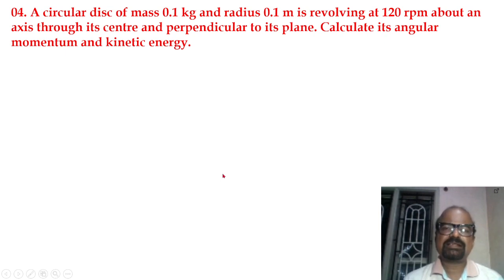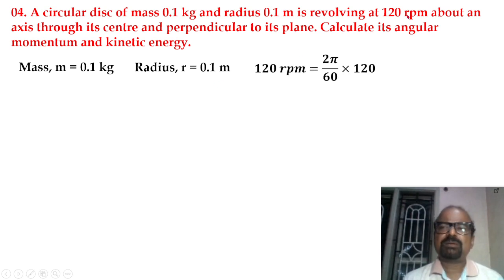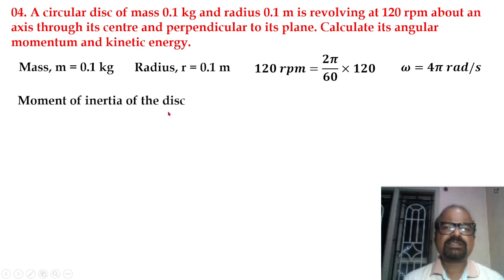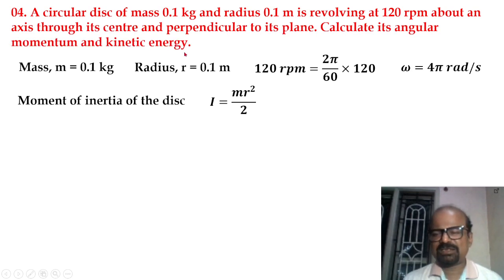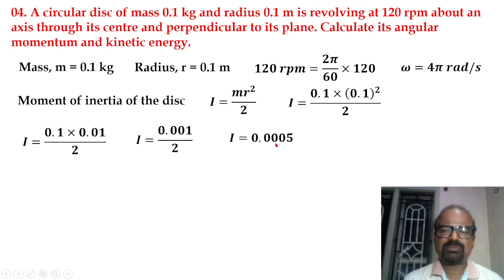Next problem: A circular disk of mass 0.1 kg and radius 0.1 meter is revolving at 120 RPM about an axis through its center perpendicular to its plane. Calculate its angular momentum and kinetic energy. Converting 120 RPM gives 4π radian per second. The moment of inertia is mR²/2: 0.1 times 0.01 divided by 2 equals 0.0005 kg·m².